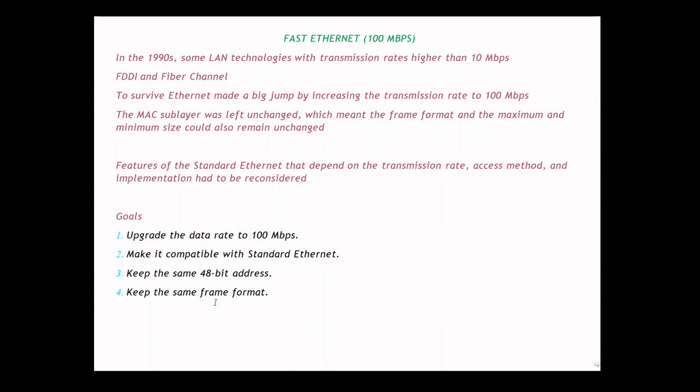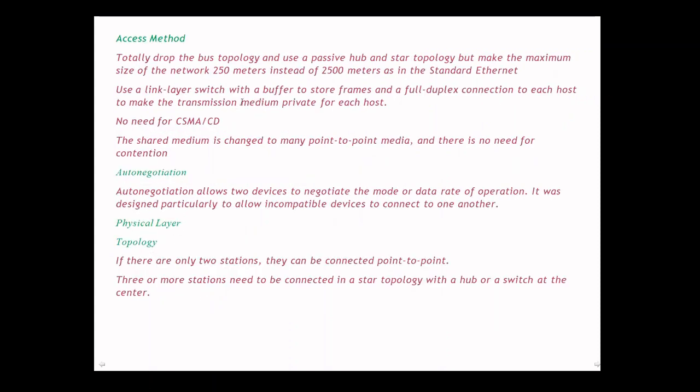In Fast Ethernet, bus topology was completely dropped. Instead of bus topology, passive hub and star topology were used, and the size of the network was also reduced to 250 meters instead of 2500 meters as in standard Ethernet. To store frames, link layer switches with buffers were used and established a full duplex connection, so the transmission medium is private for each host.